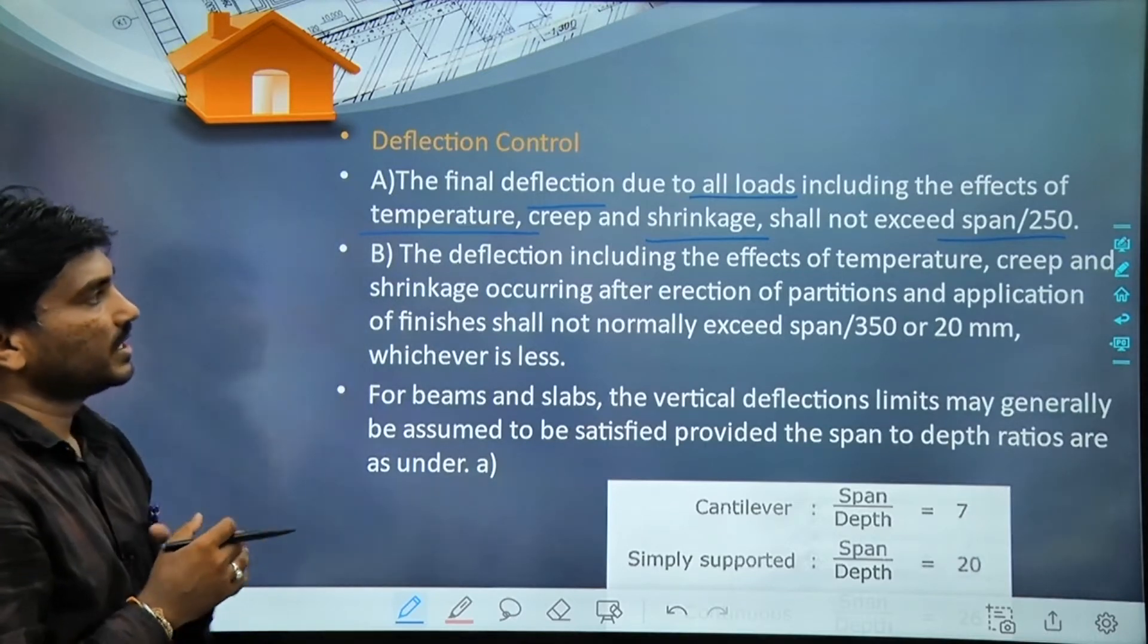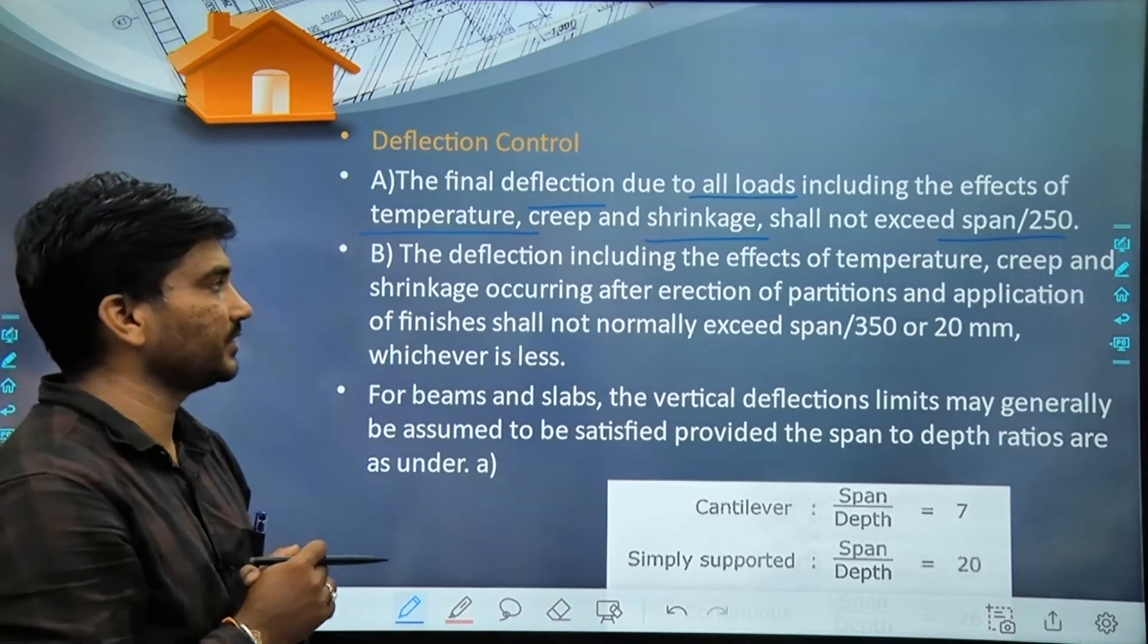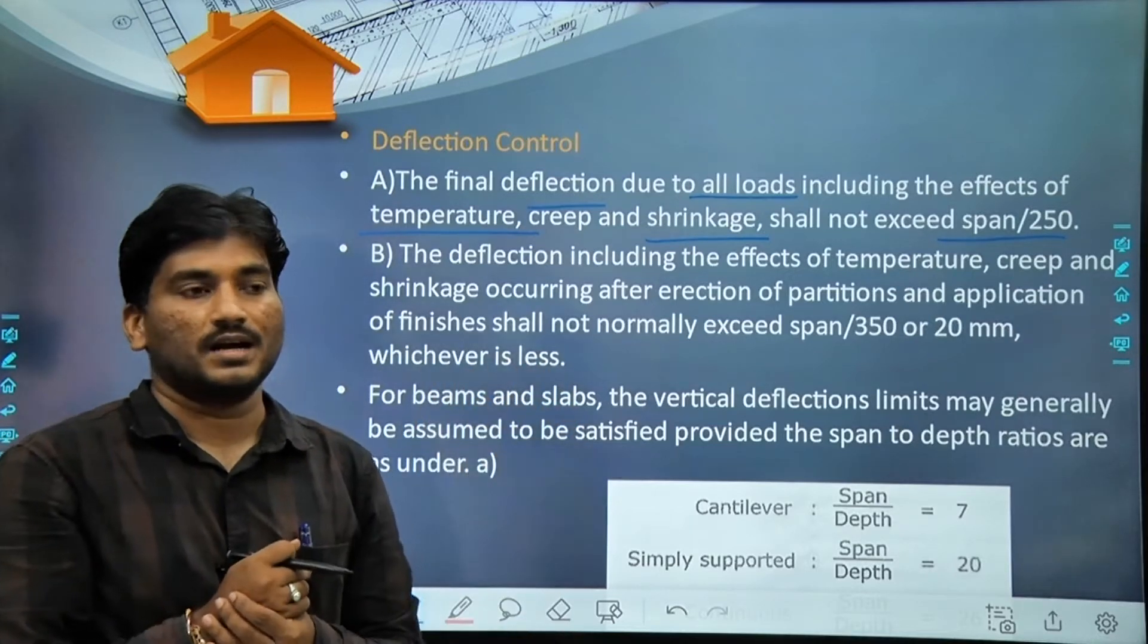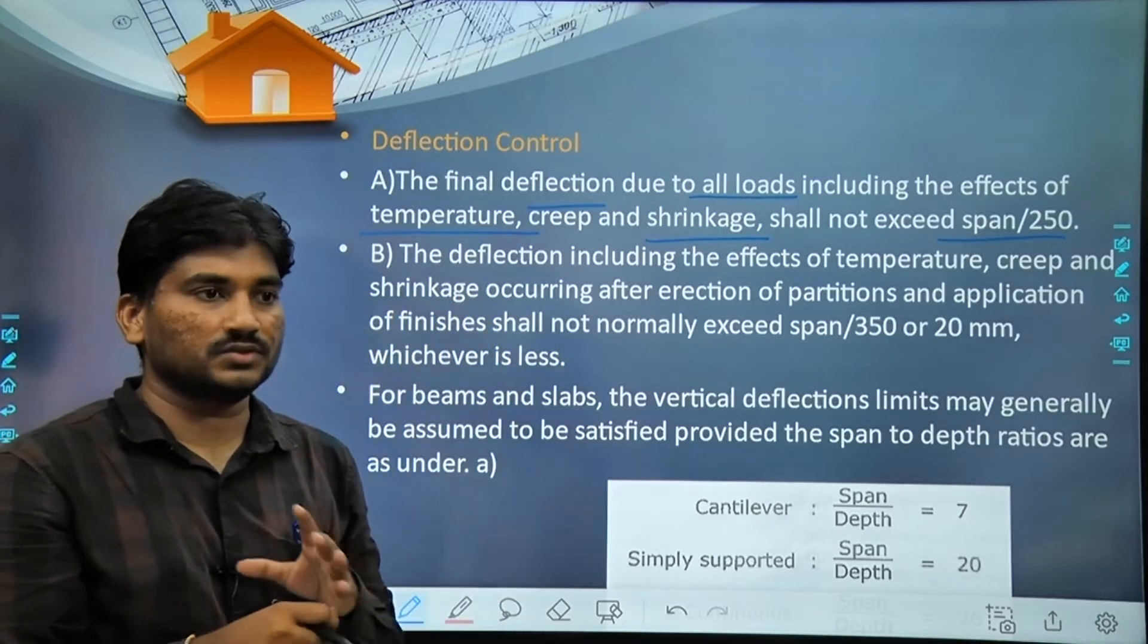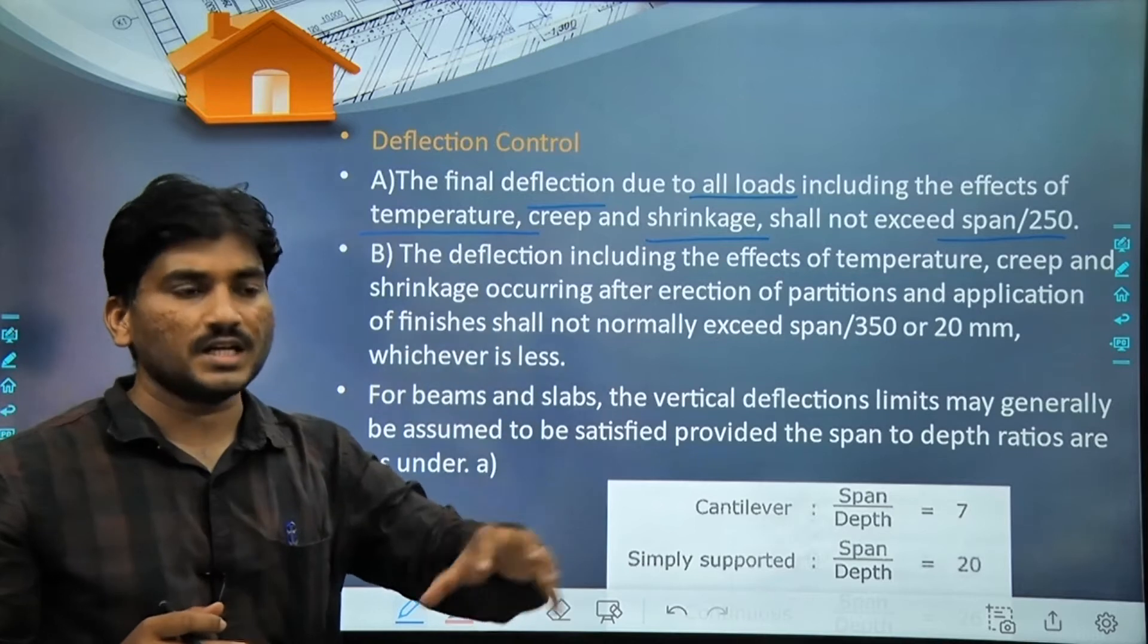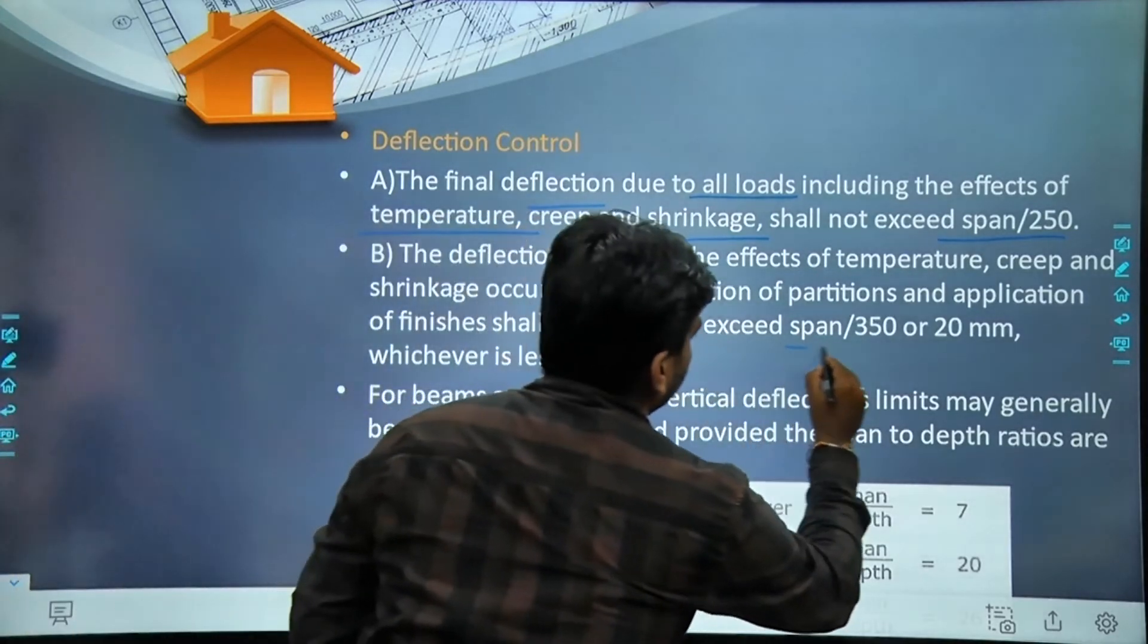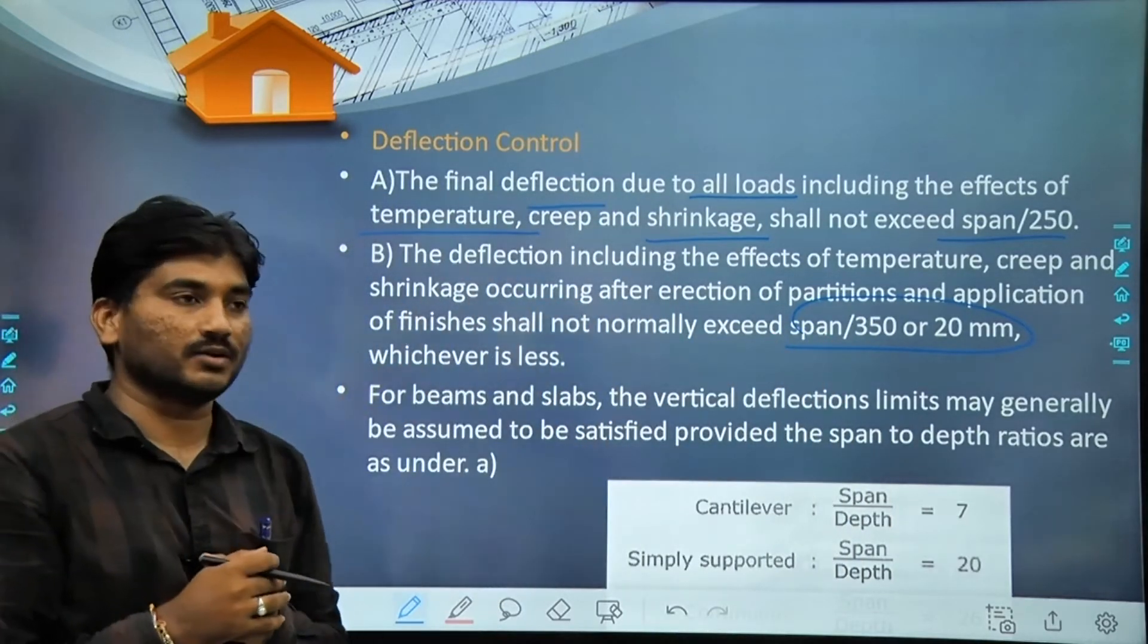The second clause says that deflection including effect of temperature, creep and shrinkage occurring after erection of partition and application of finishes shall not normally exceed span by 350 or 20 mm whichever is less. So in any case it should not exceed 20 mm when the building is empty.